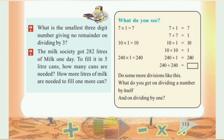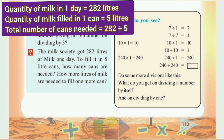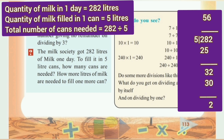A milkman precisely got 282 litres of milk in one day. To store it in 5-litre cans, how many cans are needed? The total number of cans: 282 divided by 5. 5 into 28 is 25, 28 minus 25 is 3, bring down 2 to get 32. 5 into 32 is 30, 32 minus 30 is 2.